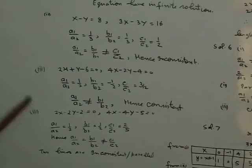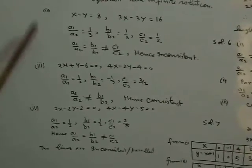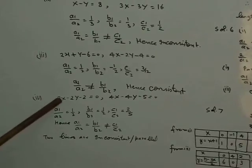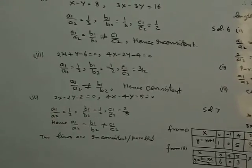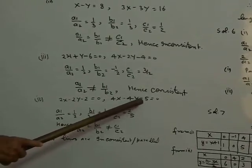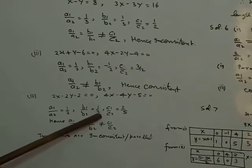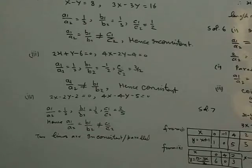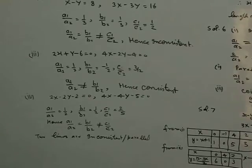The fourth part of question 4: the two equations are 2x minus 2y minus 2 equal to 0 and 2x minus 4y minus 5 equal to 0. So a1 upon a2 is equal to half, b1 upon b2 is equal to half, and c1 upon c2 is equal to 2 by 5. Since a1/a2 equals b1/b2 but not c1/c2, the two lines are inconsistent — they are parallel and do not intersect, nor are they coincident.